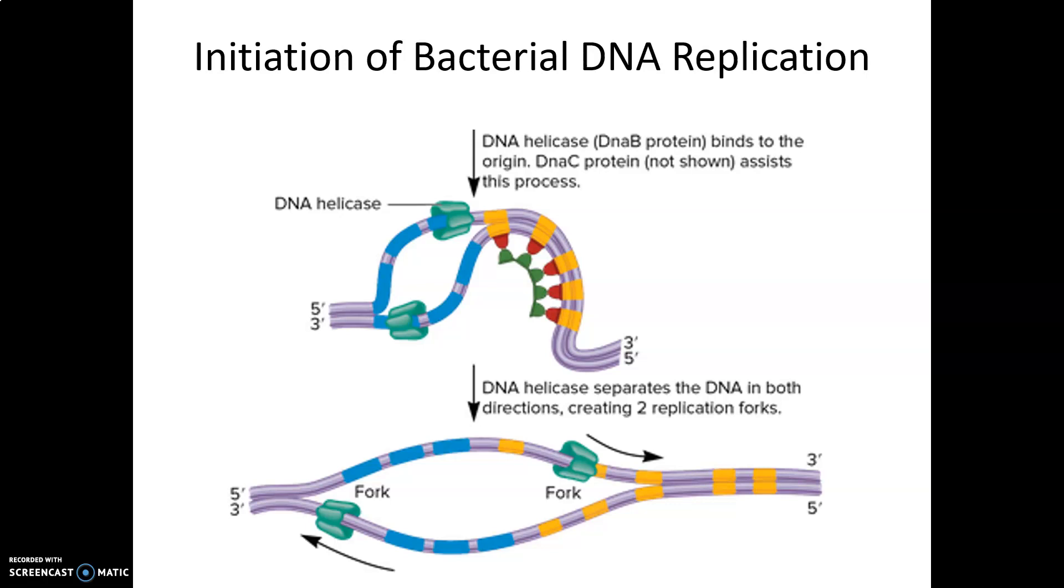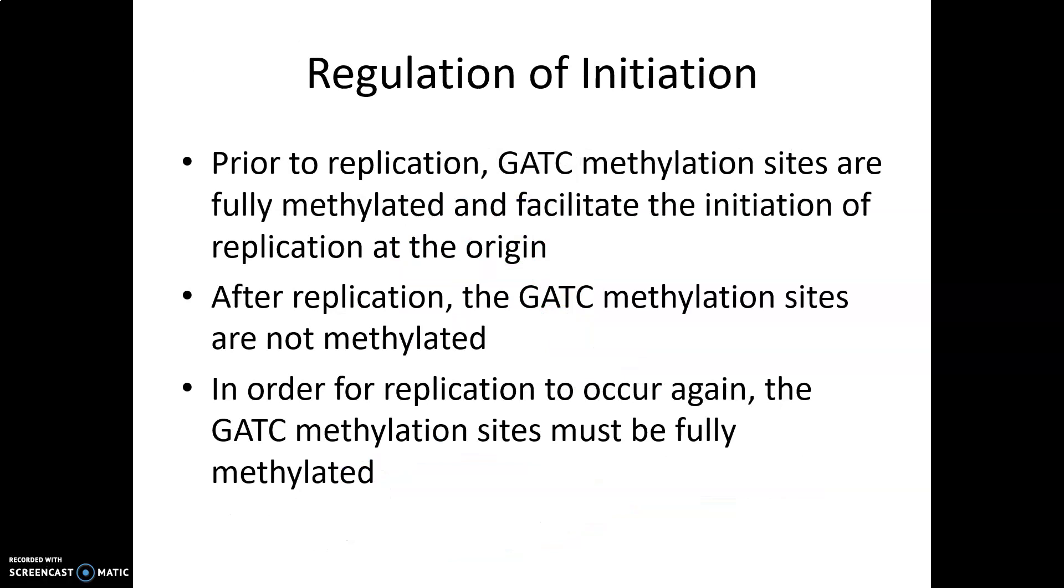To regulate initiation, we use GATC methylation sites near the origin. When they are fully methylated, replication can occur. After replication, these sites are no longer methylated and must be fully methylated again before replication can occur again. This ensures we're not replicating DNA that's already being replicated.